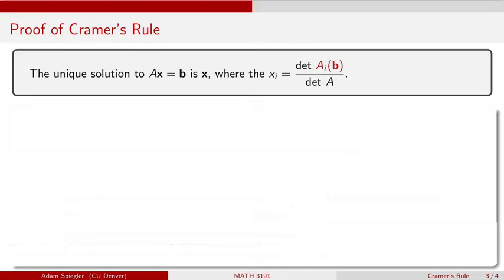Right now in this video, I want to take a look at the proof of why Cramer's rule holds. I've paraphrased Cramer's rule up top, which is: if I have the matrix equation AX equals B, where A is an invertible n-by-n matrix, then we know this system has a unique solution. Cramer's rule says that the i-th entry in the solution can be written as the determinant of A sub i(B) divided by the determinant of the coefficient matrix A.